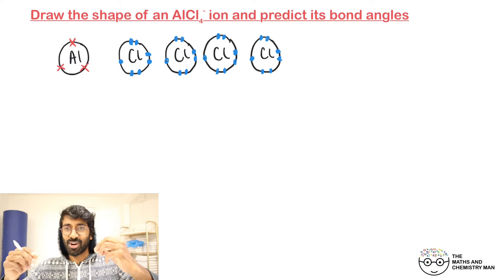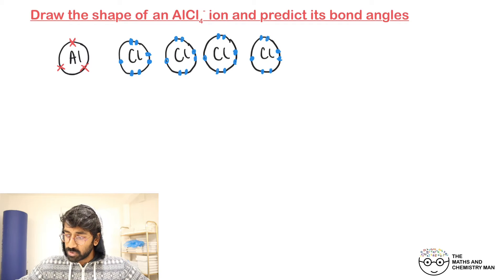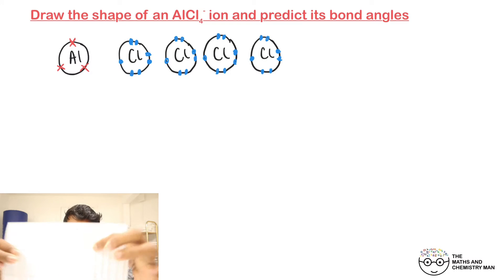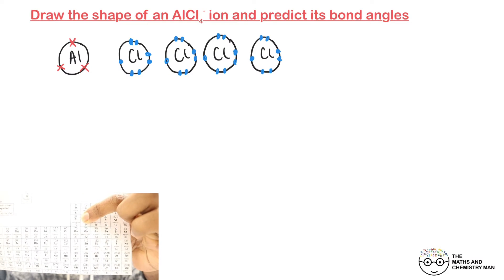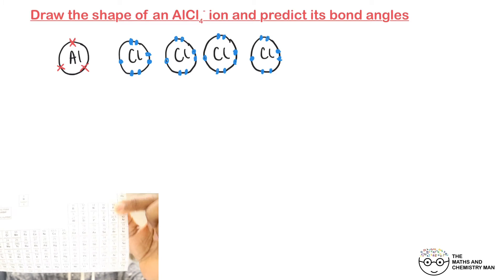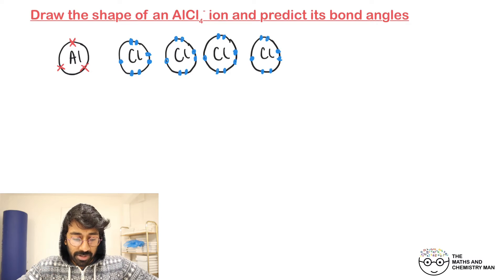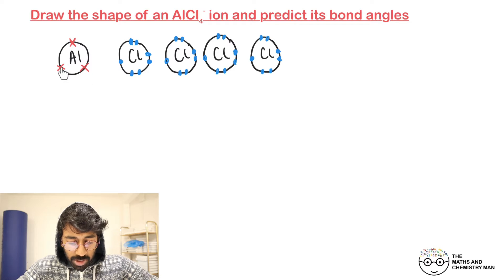Aluminium is in group number three, and chlorine is in group number seven. That means aluminium is going to have three electrons on its outer shell, whereas each of these chlorines is going to have seven on its outer shells.